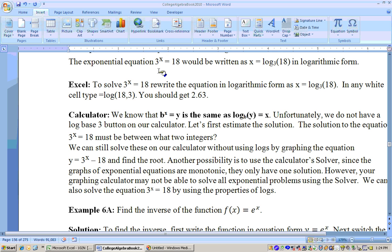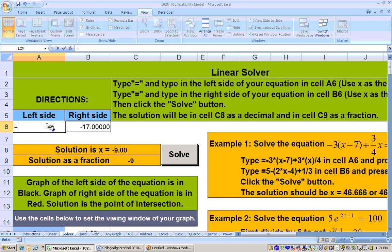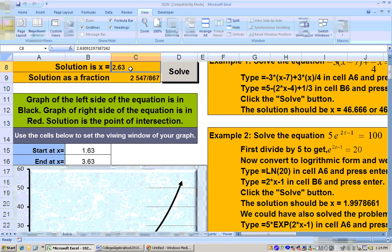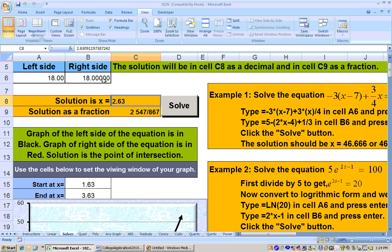To solve that same problem, 3 to the x equals 18 by hand, that's rather difficult. We can also solve this on the solver sheet. On this side, I'll type equals 3 raised to the x and hit enter. And on this side, I'll type in 18 and hit enter. And if I click solve here, then it goes through its gyrations, and it gets the answer of 2.63. If you think about it, 3 to the first is 3, 3 to the second is 9, 3 to the third is 27. So, it's somewhere between 2 and 3.